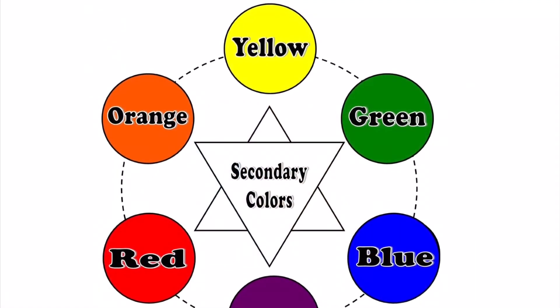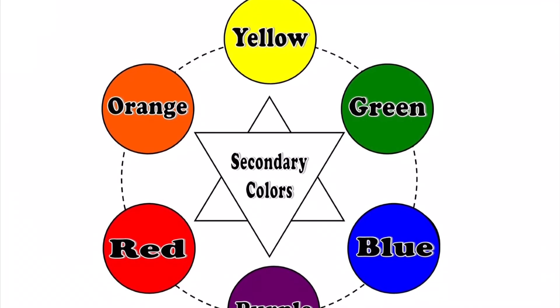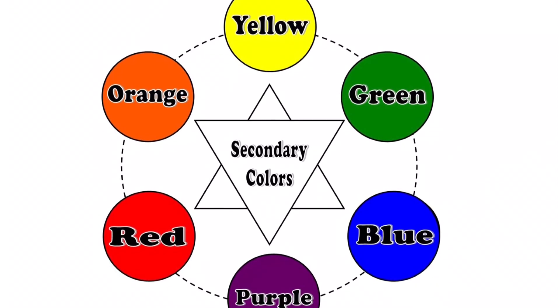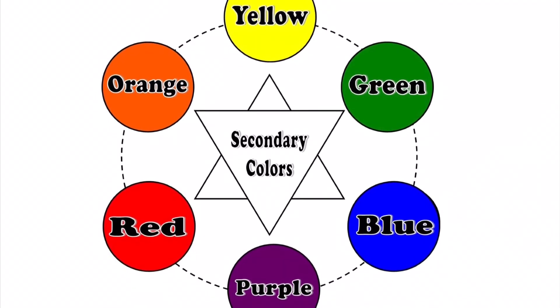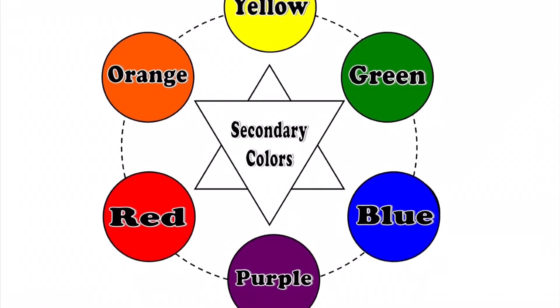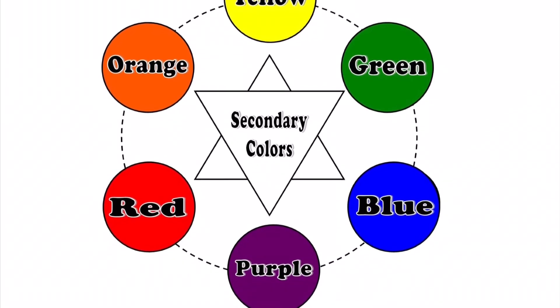On a basic color wheel, the secondary colors are between the primary colors. Yellow and red make orange, so orange is between yellow and red. Yellow and blue make green, so green is between yellow and blue. And then blue and red make purple, so purple is between blue and red.